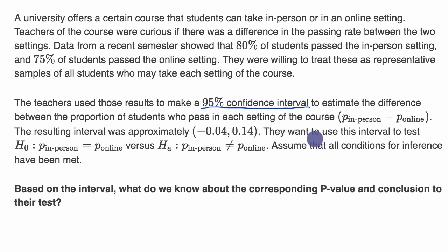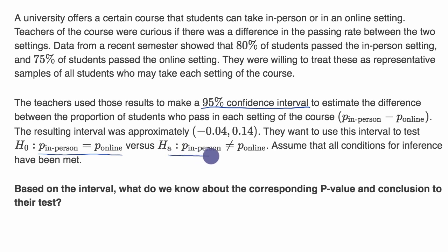They want to use this interval to test their null hypothesis that the true proportions are the same versus their alternative hypothesis that the true proportions are different. Assume that all conditions for inference have been met.